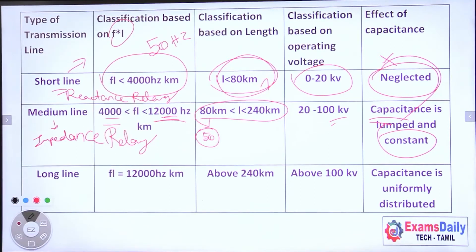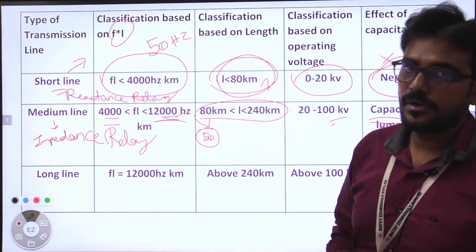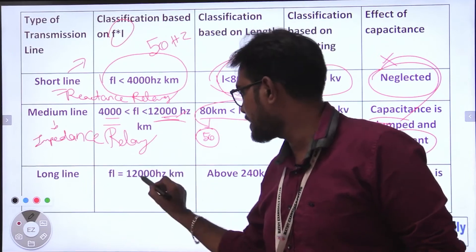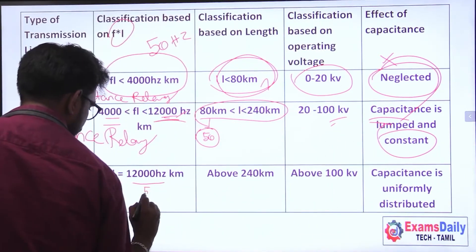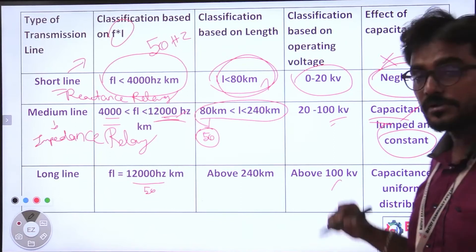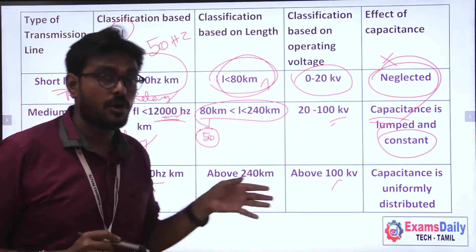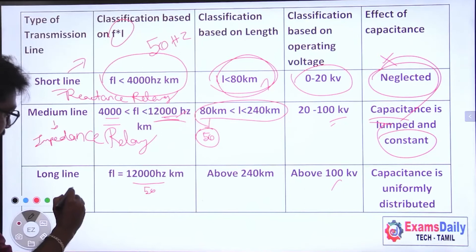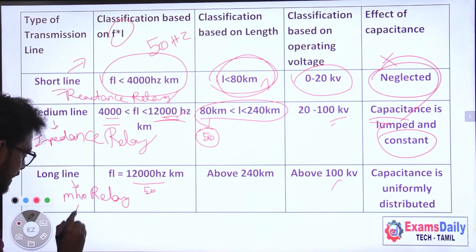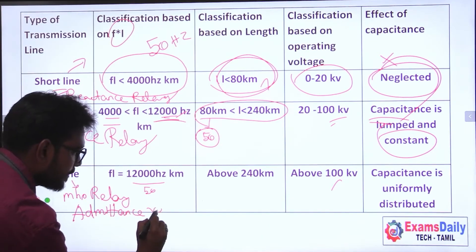For the long transmission line, the frequency-length product is more than 12,000. The length is above 240 km, and the operating voltage is above 100 kV. In a long transmission line, capacitance is uniformly distributed. The relay used for long transmission line is the mho relay, also called the admittance relay.